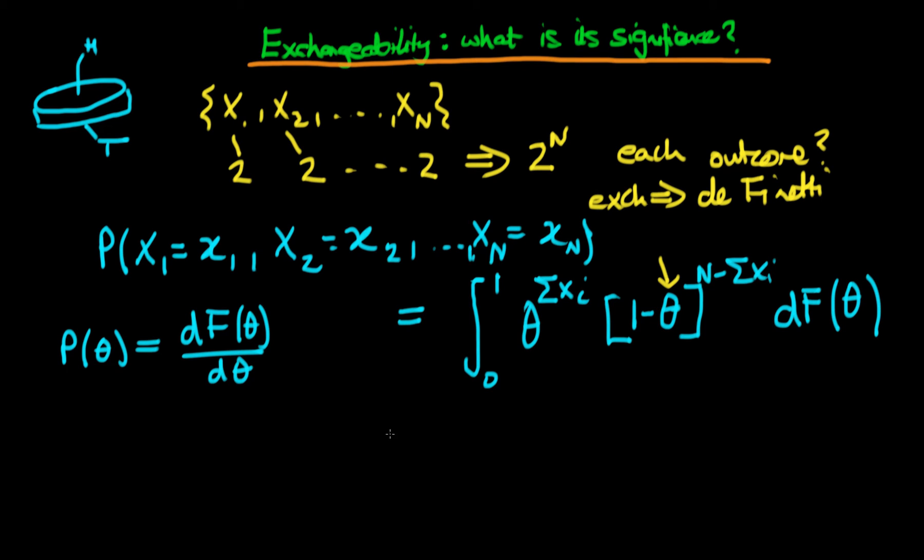And in that circumstance, this joint probability now becomes the integral from 0 to 1, because theta here actually represents the limiting proportion of heads in our particular throws of the coin. So it's the integral from 0 to 1 of theta to the power of the sum of xi times 1 minus theta to the power n minus the sum of xi.